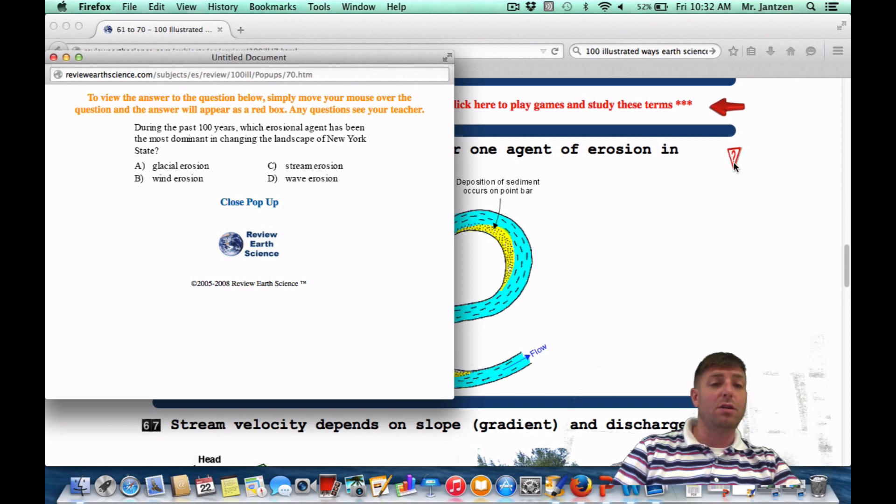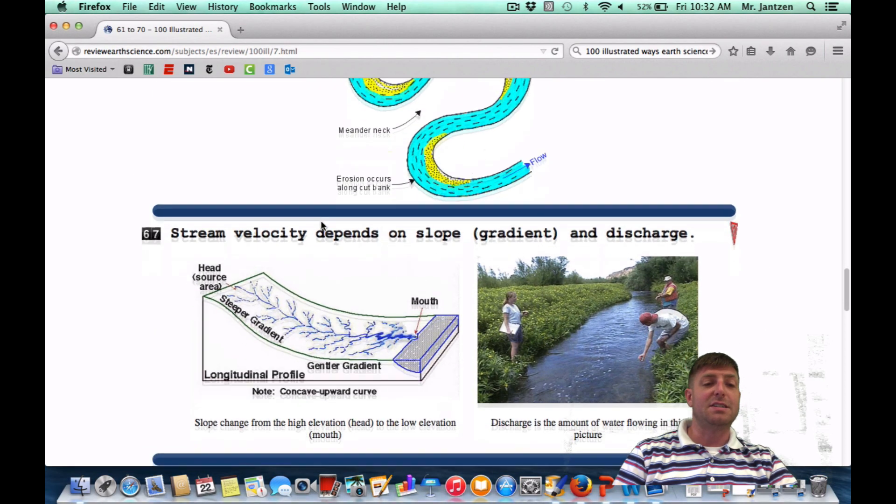During the past 100 years, which erosional agent has been the most dominant in changing the landscape of New York State? Key there, the past 100 years. We're talking about the past 20,000 years, we're talking about glaciers. But the past 100 years, we're talking about streams, or choice C.